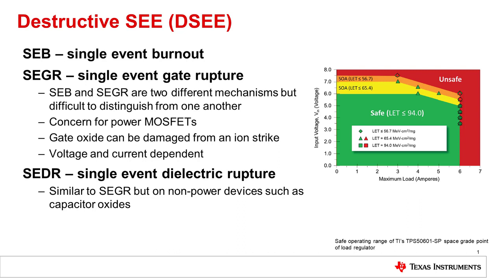For commercial parts that exhibit burnout and gate rupture, it can be necessary to derate these devices for space missions. For example, a 100-volt MOSFET may have to be derated down to 40 volts due to these effects.